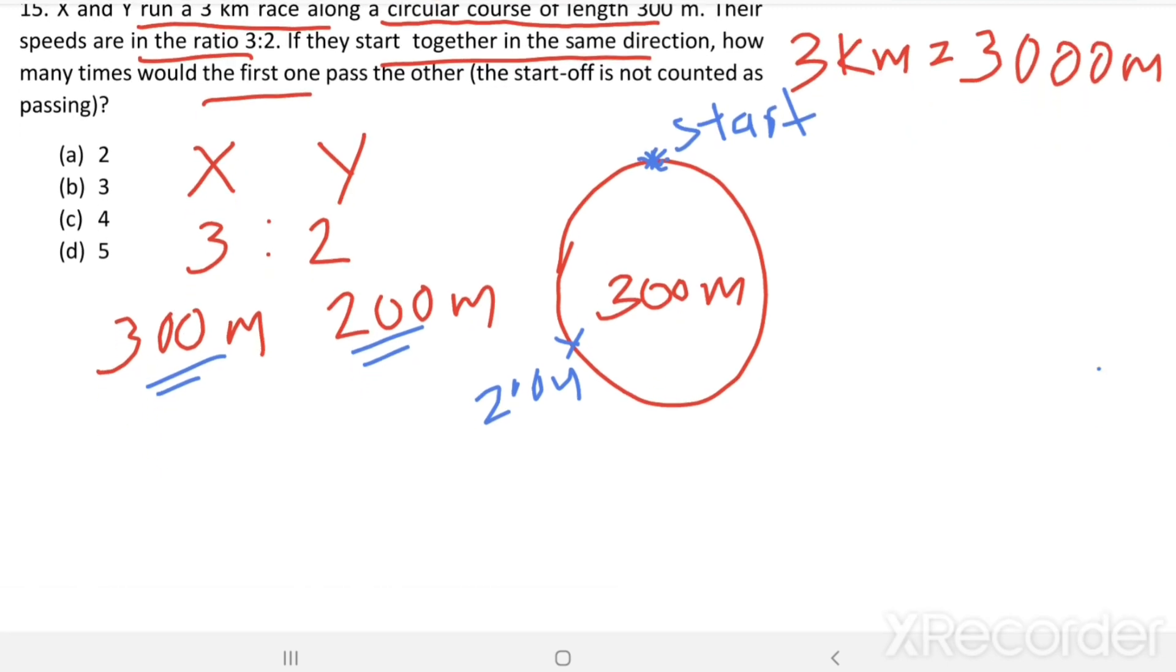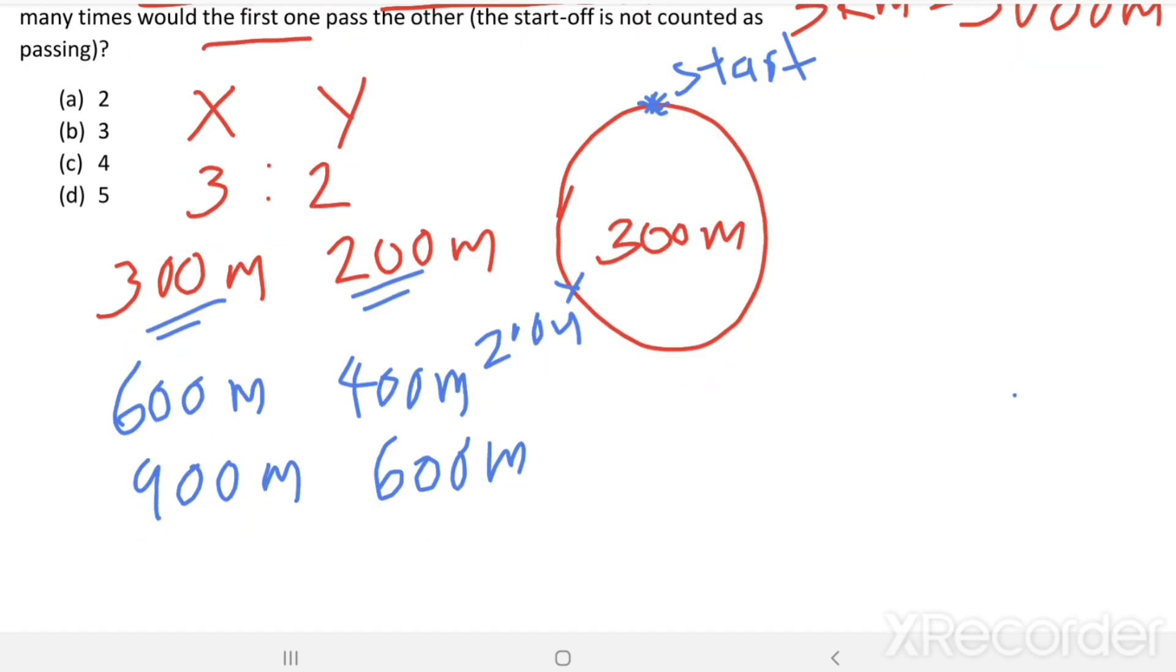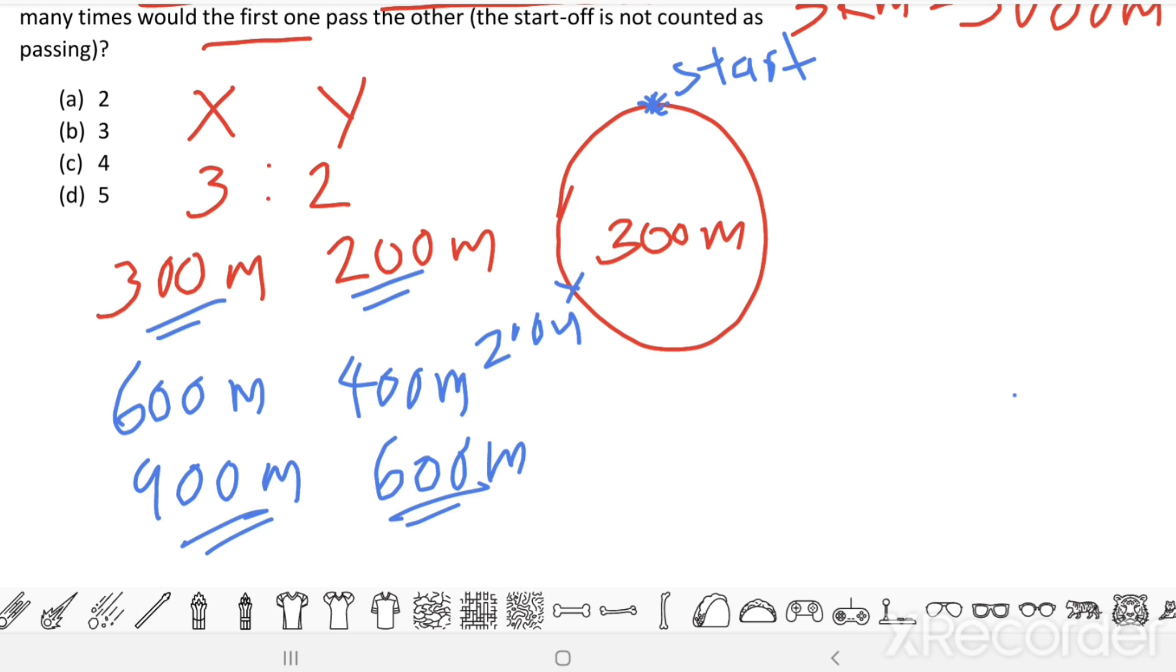Then when X completes 600 m, Y completes 400 m. When X completes 900 m, Y completes 600 m. That means when X completes three rotations, Y completes two rotations. That means both of them meet at the starting point.